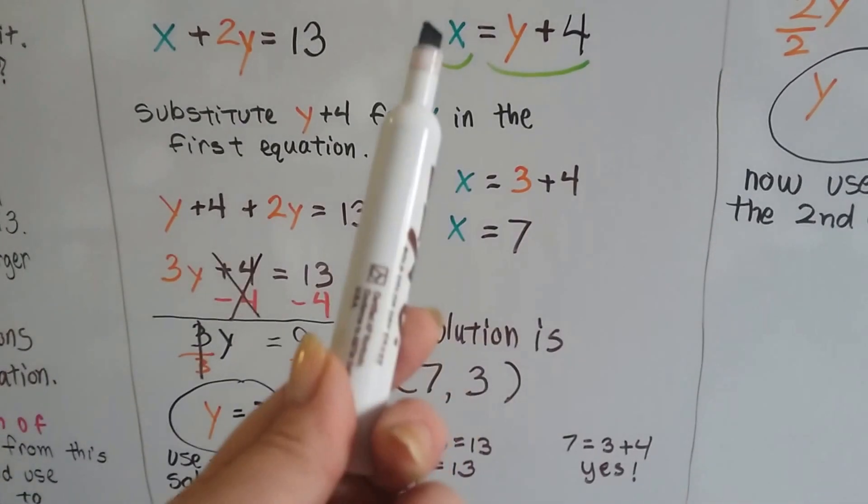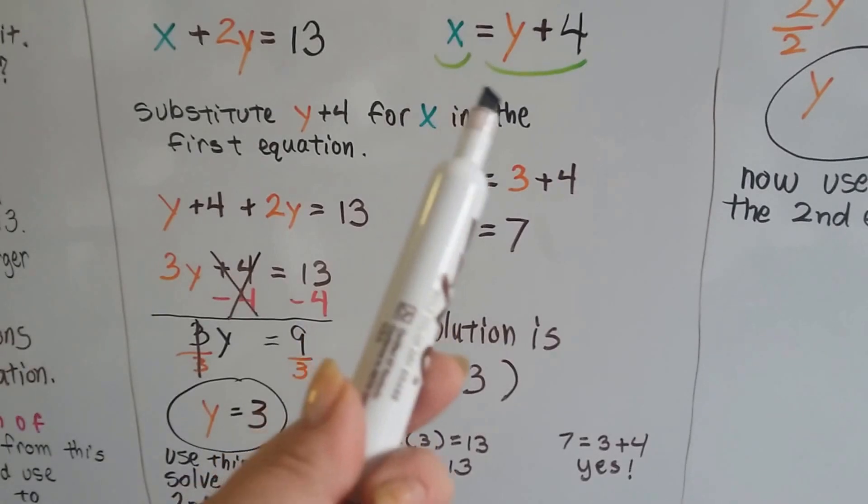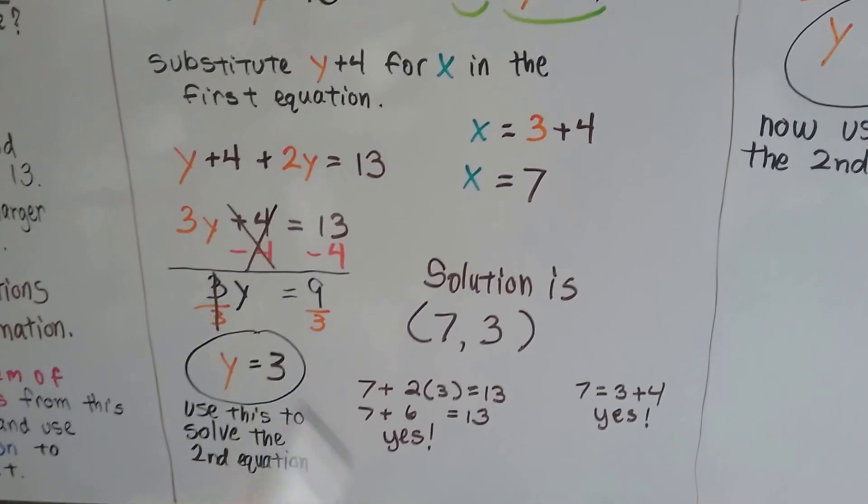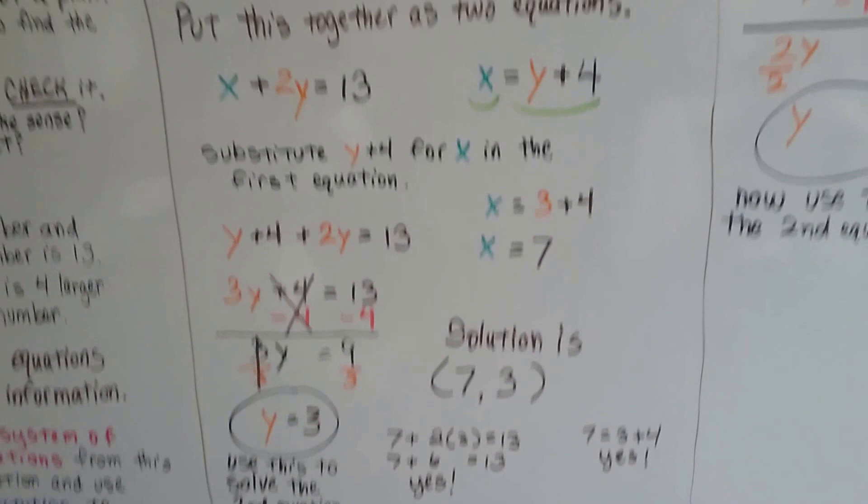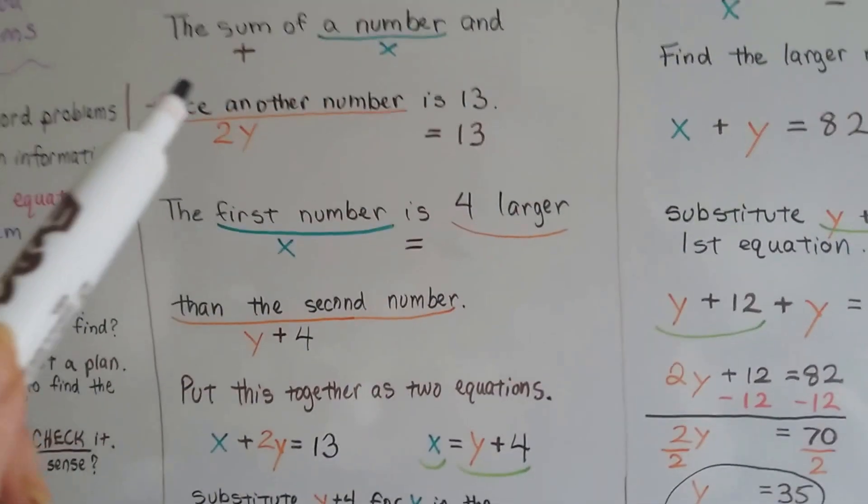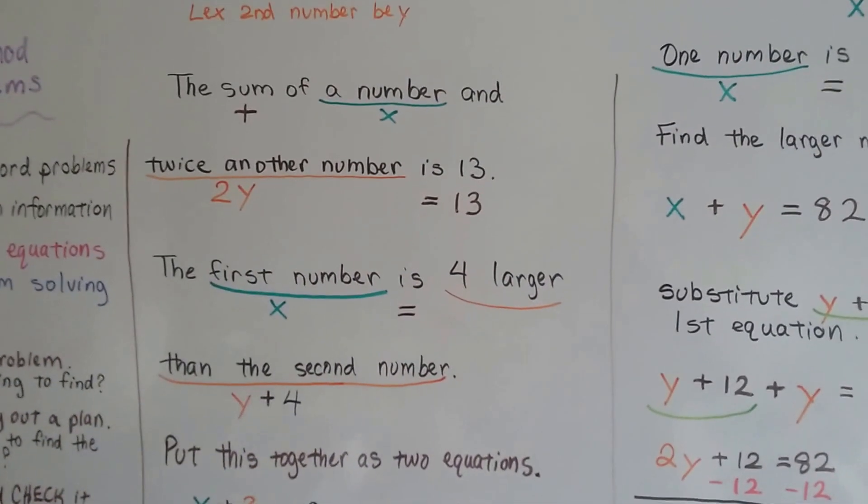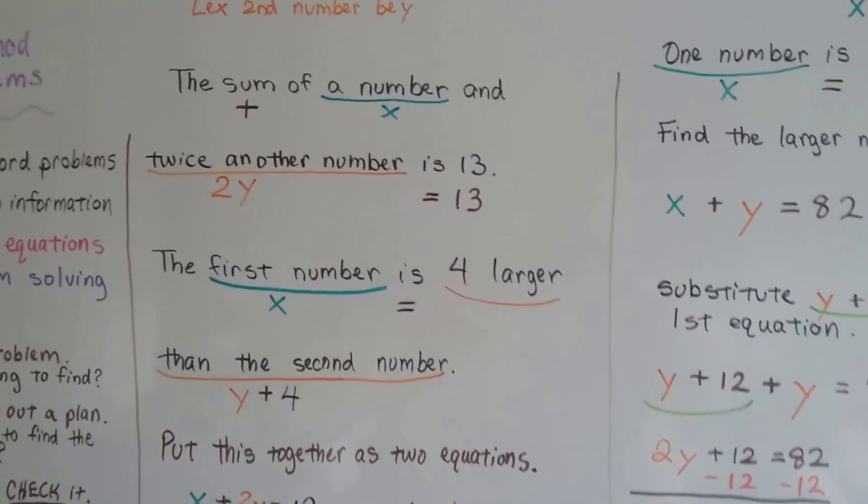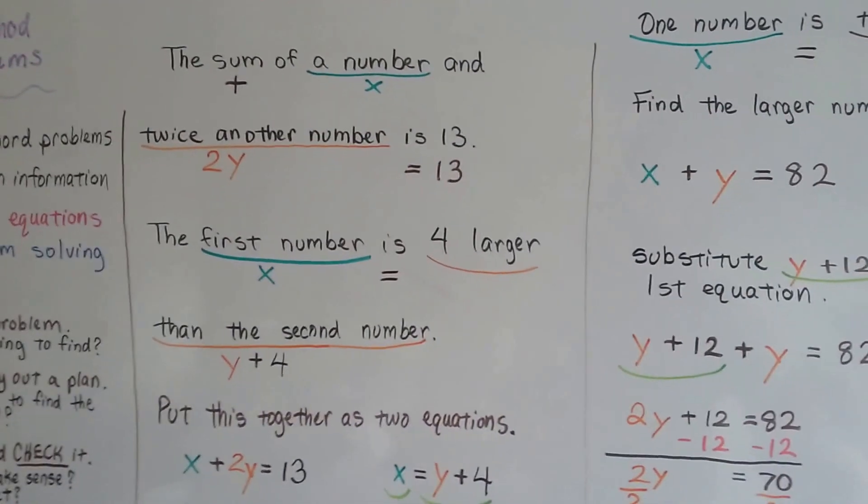And 7 equals 3 plus 4. Yes, that's true. So it worked. So we took the words and slowly figured out what is the x and what is the y. And then we put it together to make two equations.